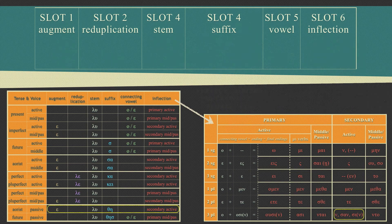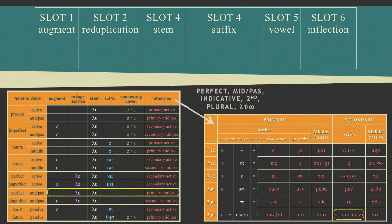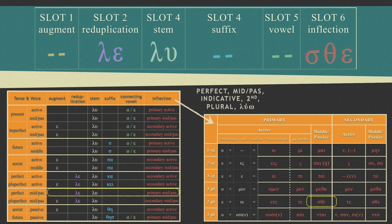Finally, what would a perfect middle passive indicative second person plural form of Lua look like? Looking at the slot machine table, we see that it would build onto the stem by taking reduplication and the primary middle passive ending. Looking to our endings table, we see that the second person plural of the primary middle passive endings is sthe. So the slot machine would look like this, with the final result looking like this.